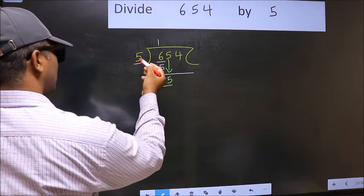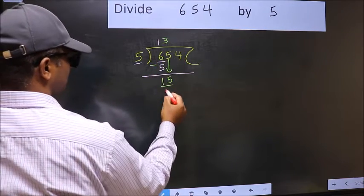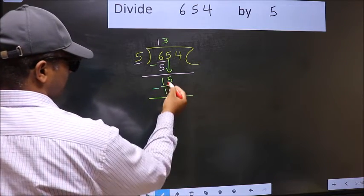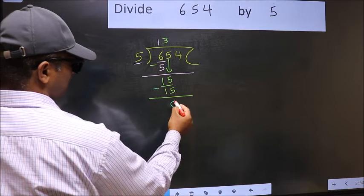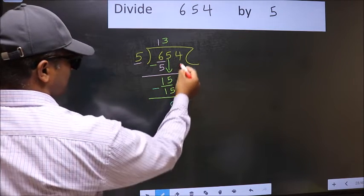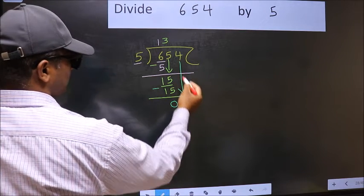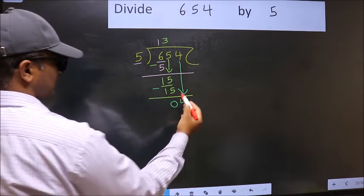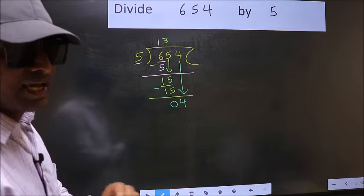When do we get 15 in the 5 table? 5 times 3 is 15. Now you should subtract. 15 minus 15 is 0. After this, bring down the beside number. So 4 down. After this step, the mistake happens.